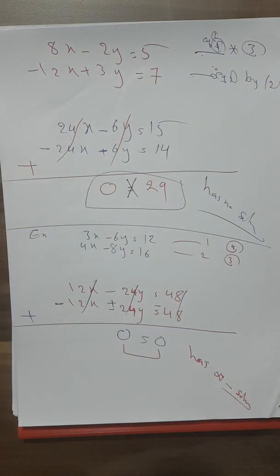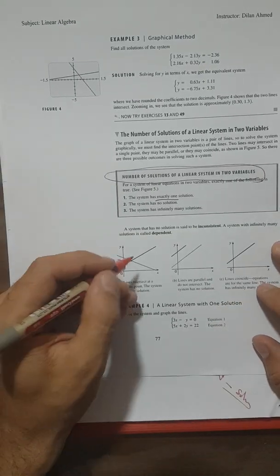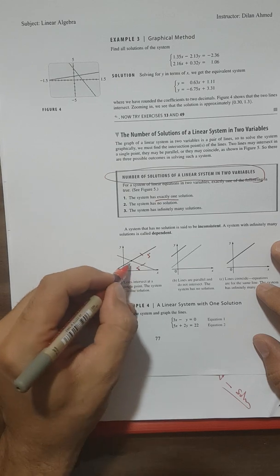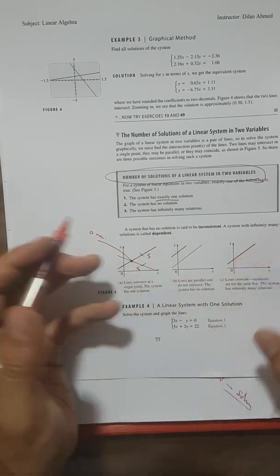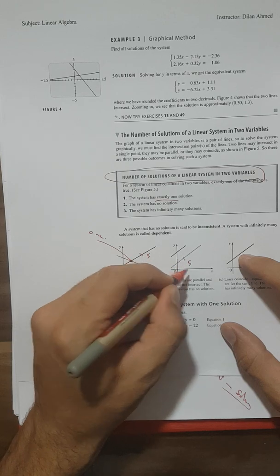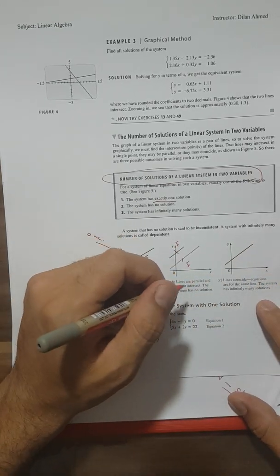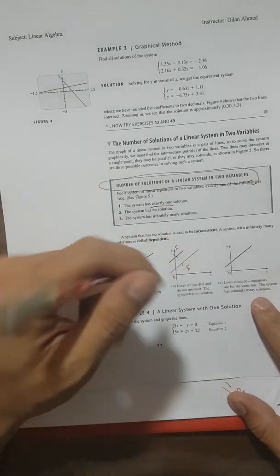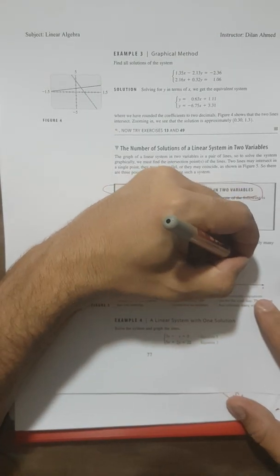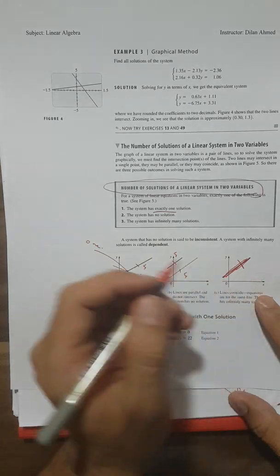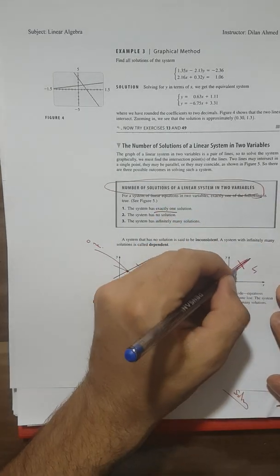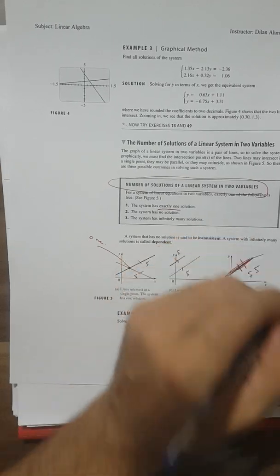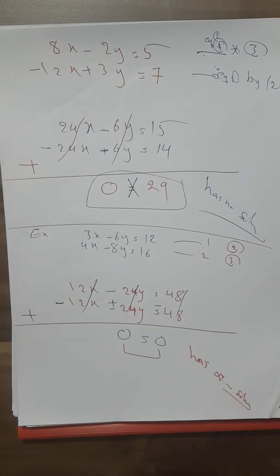Geometrically: if two lines intersect at one point, there is exactly one solution. If they are parallel and never intersect, there is no solution. If the two lines coincide (lie on top of each other), every point on the line is a solution, giving infinitely many solutions.